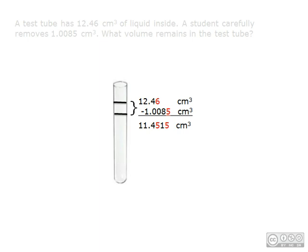However, this is not our final answer. When rounding to the correct number of significant figures for addition or subtraction, we look for the number with the least number of decimal places. In our question, we can see that it would be 12.46, because it ends in the hundredths instead of in the ten-thousandths for 1.0085 cubic centimeters.